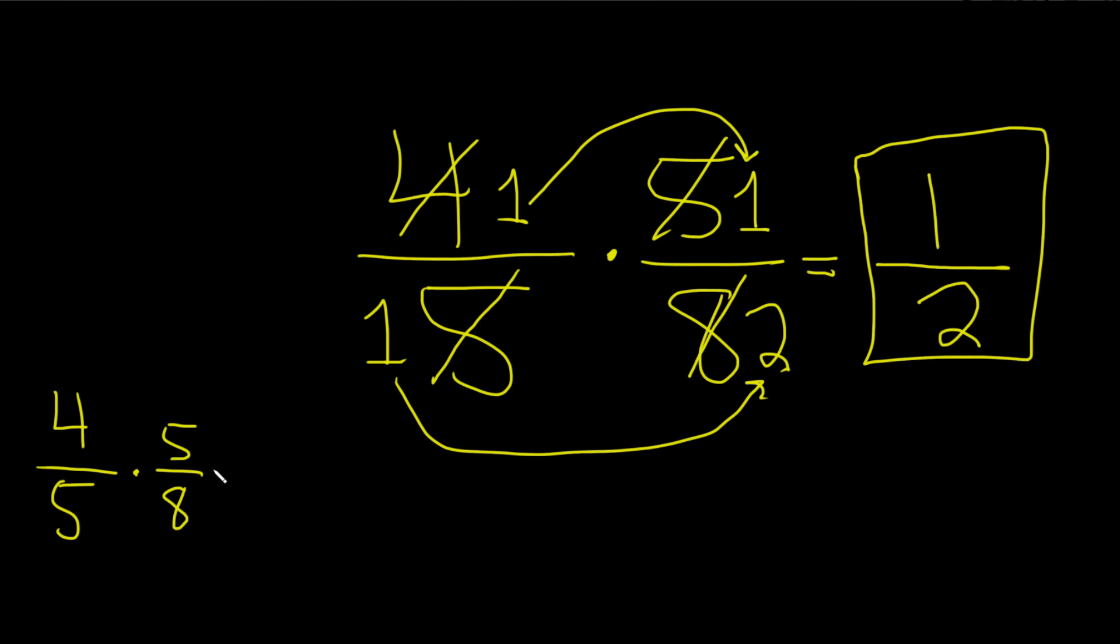Say you have 4 over 5 times 5 over 8 and say, hey, you know what, I just want to multiply straight across. I don't want to do all this. Well, that's fine. Watch this.